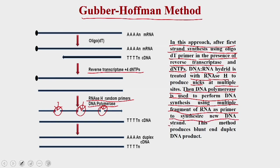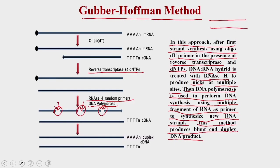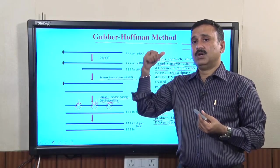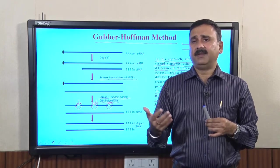This Gubler-Hoffman method generates blunt-end DNA with no cohesive ends. If you use this method, you must use restriction digestion, adapter molecules, or linker molecules to insert the DNA into cloning vectors to prepare the cDNA library.